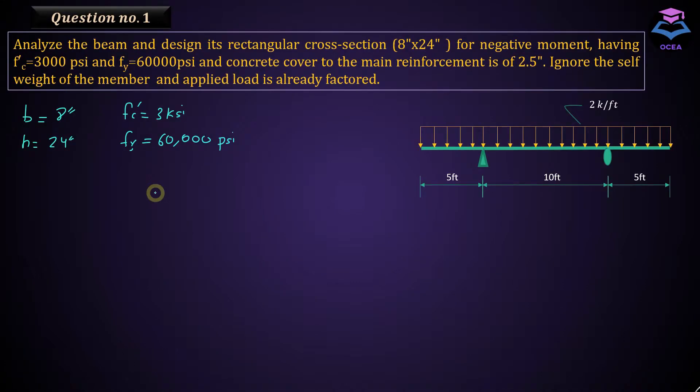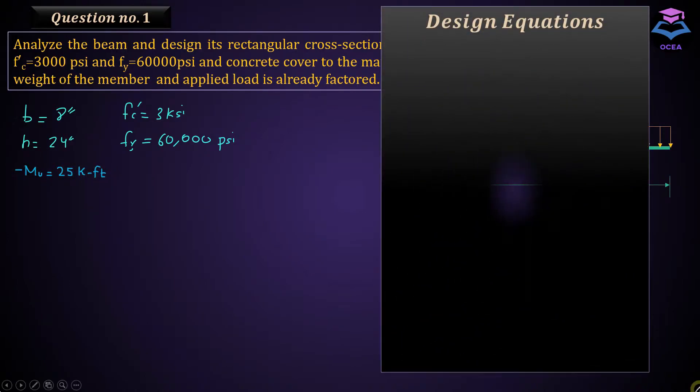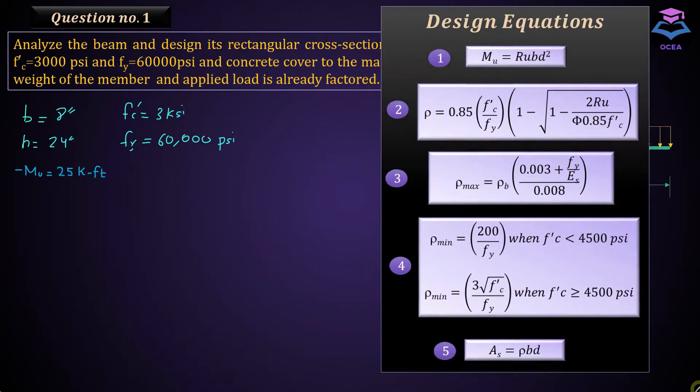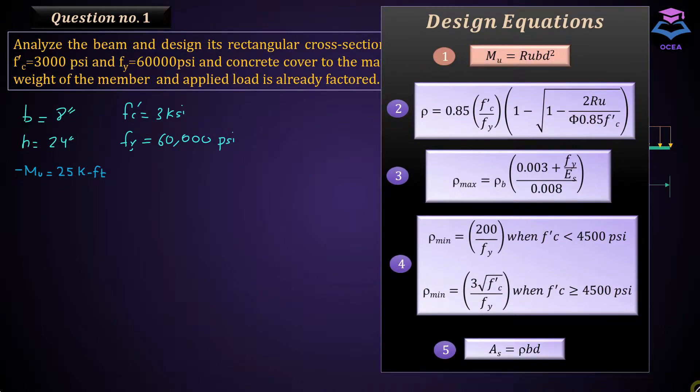Alright, let's get started. The data remains the same here and the change is that we have to design for negative moment Mu equals to 25 kip fin. These are the equations that will be used for designing the section. This equation will be used to calculate Ru factor, the second equation will be utilized to evaluate rho, that is the percentage of steel. Then we will assess the value of rho max and rho minimum, that is the maximum and minimum percentage of steel. The actual percentage of steel to be used in the section should be between rho max and rho minimum. And in the end we will calculate the area of steel to be used in the section by using this equation number 50.